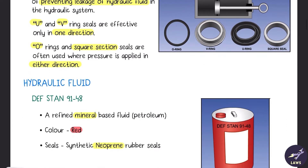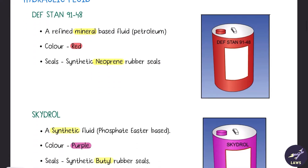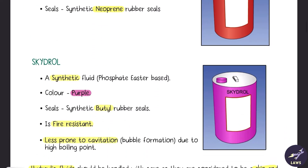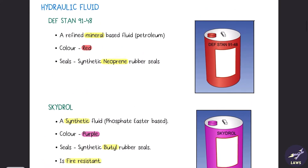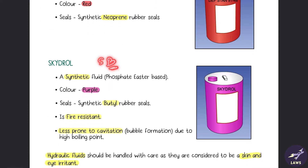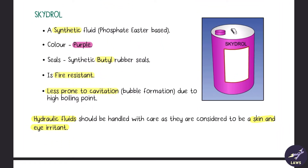Next we look at hydraulic fluids. One is mineral based, the other is a synthetic fluid. Def Stan is a mineral based fluid — color is red, and the seals used are neoprene rubber seals. Skydrol is a synthetic fluid — color is purple, seals used are butyl rubber seals. It is fire resistant and less prone to cavitation. Cavitation means bubble formation. A memory aid: DN — Def Stan uses Neoprene, Skydrol uses Butyl. These hydraulic fluids are considered to be a skin and eye irritant.